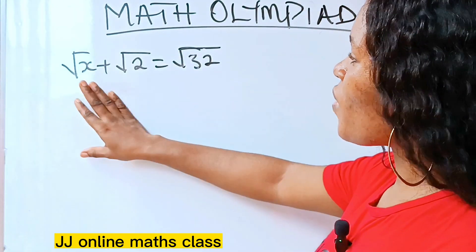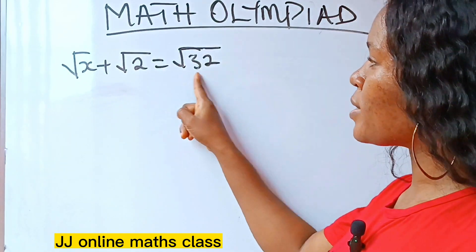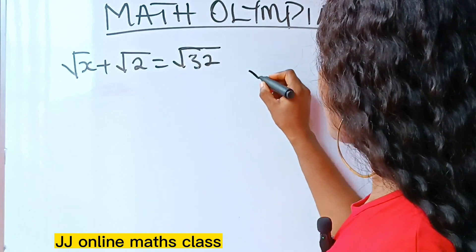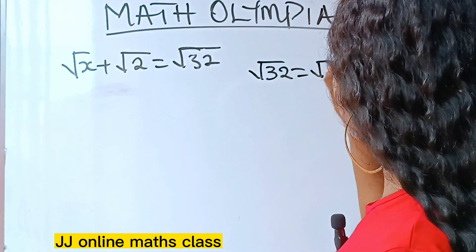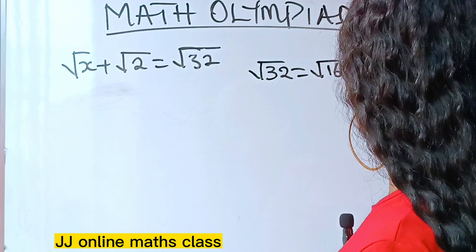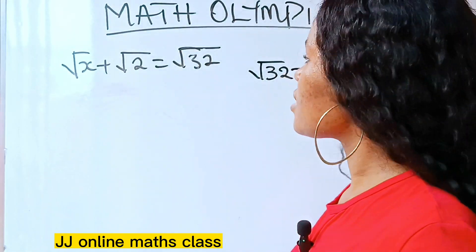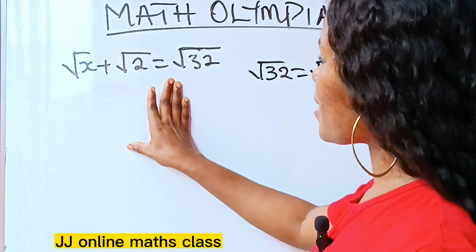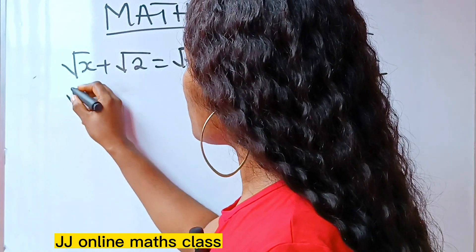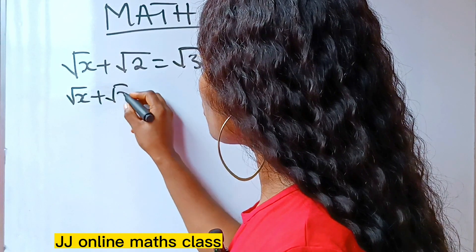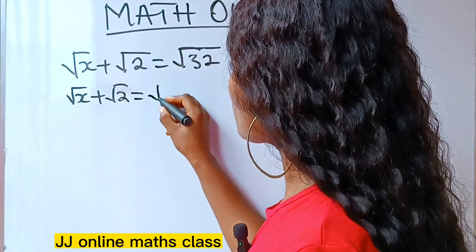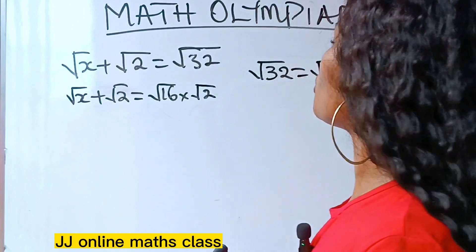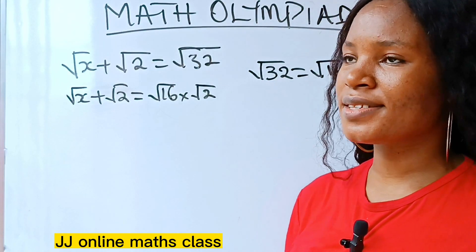First of all, we need to split this, because root 32 is the same thing as root 16 times root 2. So we need to solve root x plus root 2 is equal to root 16 times root 2.